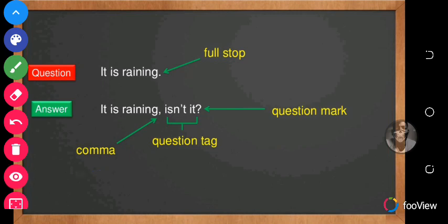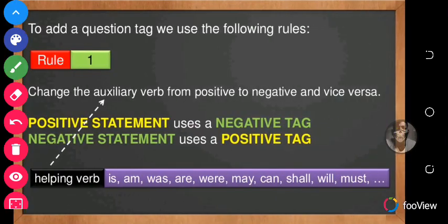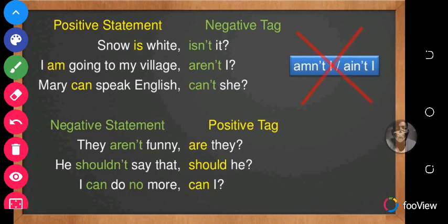Let's look at how question tags are formed. In the formation of question tags you need to know five general rules. Rule number one says that you need to change the auxiliary verb from positive to negative and vice versa. An auxiliary verb is also known as a helping verb, and examples are: is, am, was, are, were, may, and so on. So positive statements use a negative tag; a negative statement uses a positive tag.